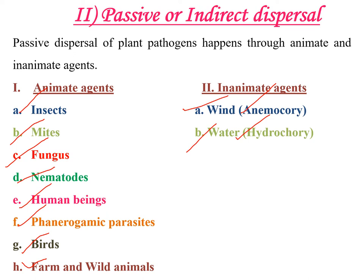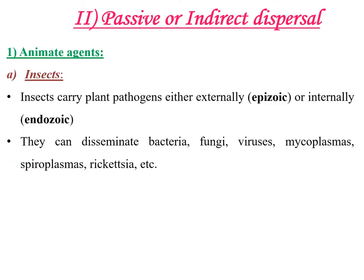Let us see examples of pathogens dispersed by individual animate and inanimate agents. Starting with insects: insects carry plant pathogens either externally — called epizooic — or internally, known as endozooic. These insects can disseminate various kinds of plant pathogens including bacteria, fungi, viruses, mycoplasmas, spiroplasmas, rickettsia, etc.